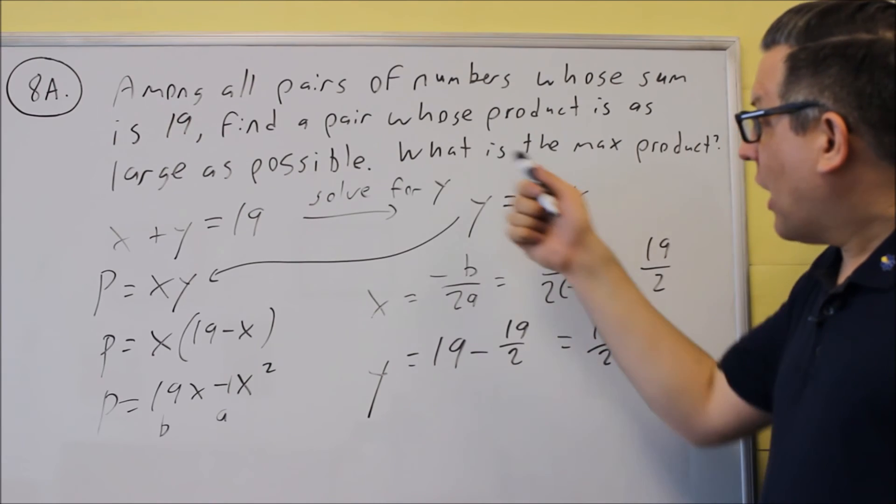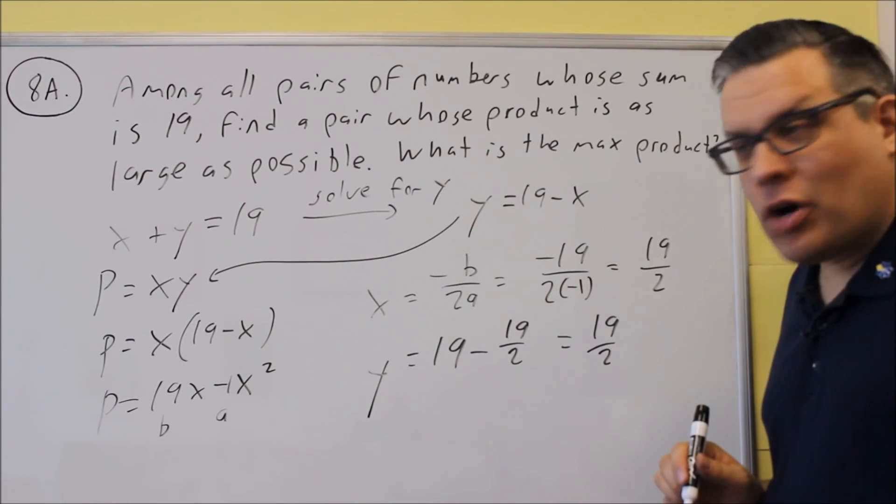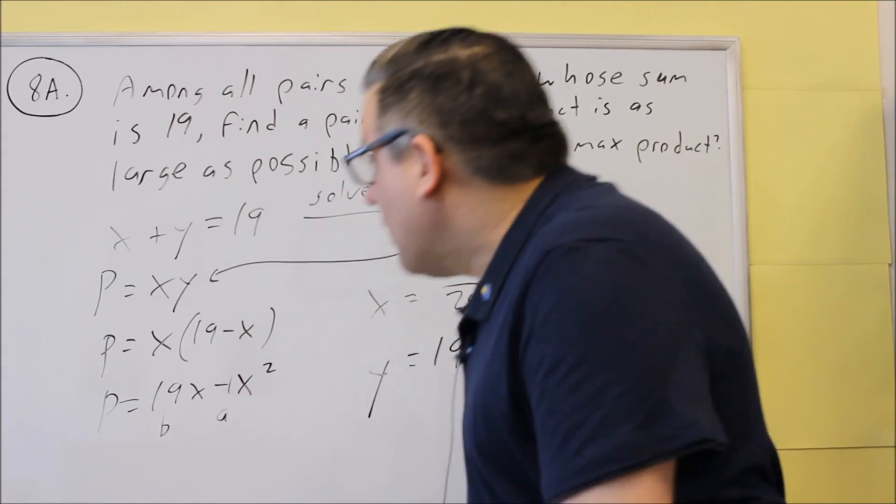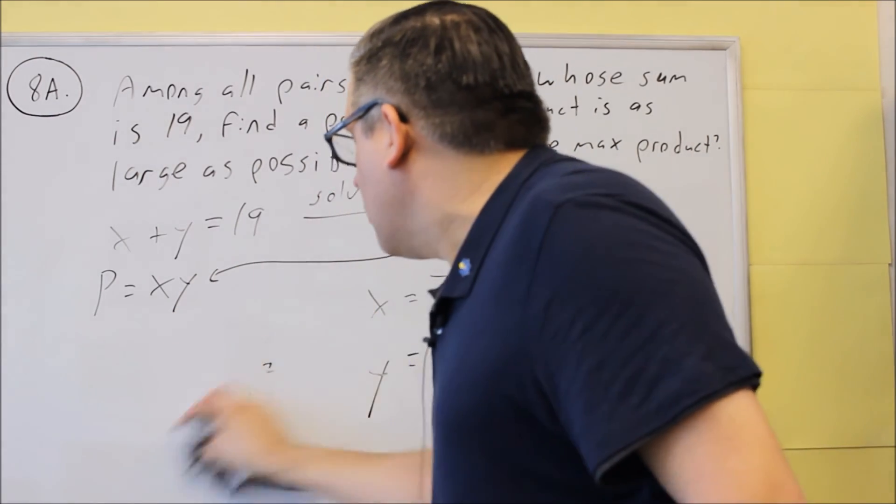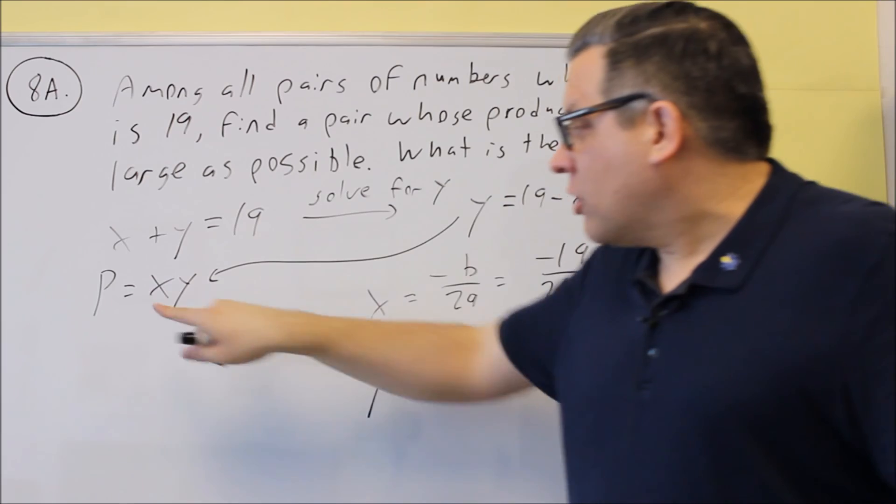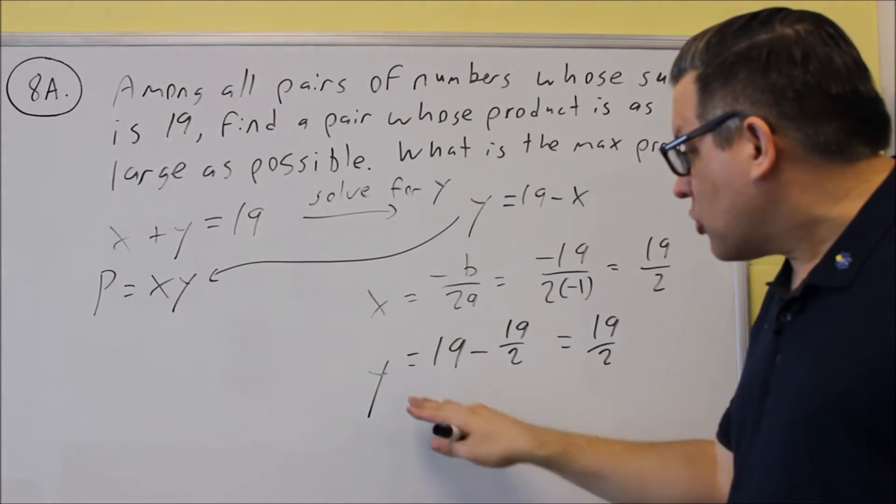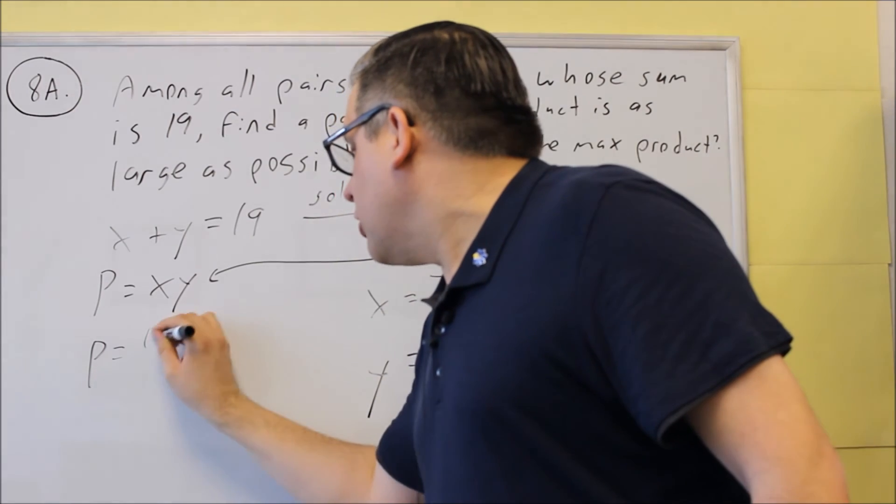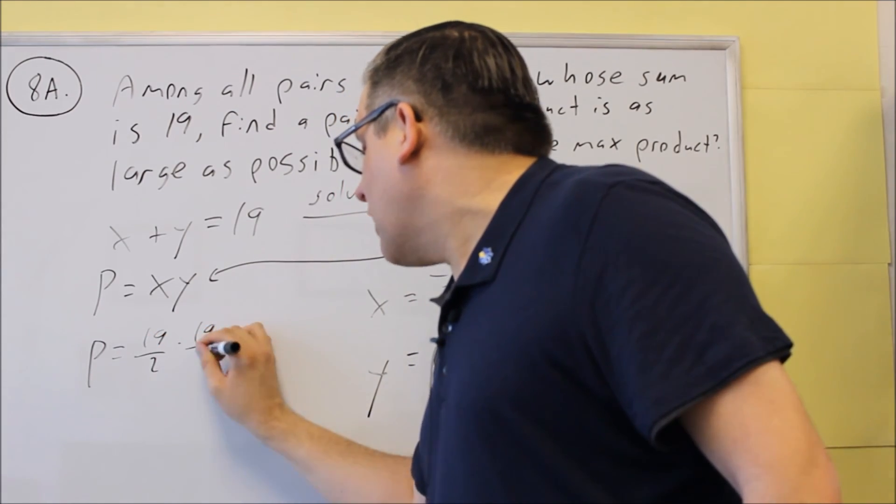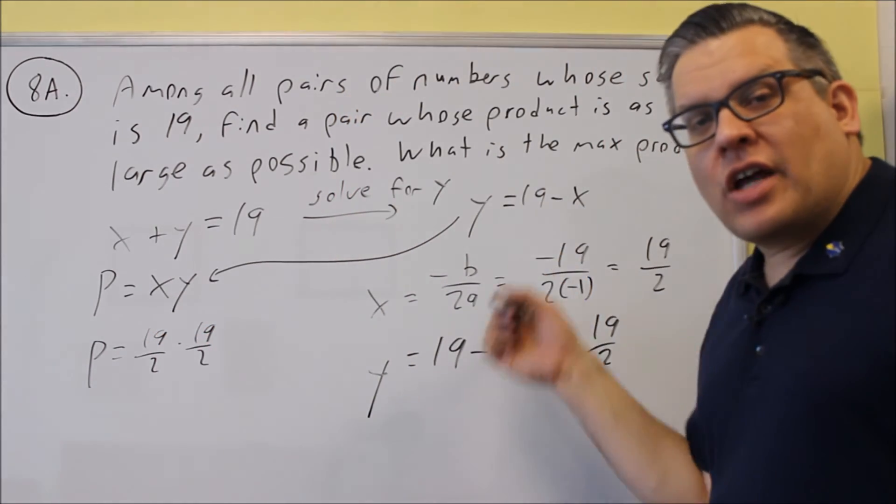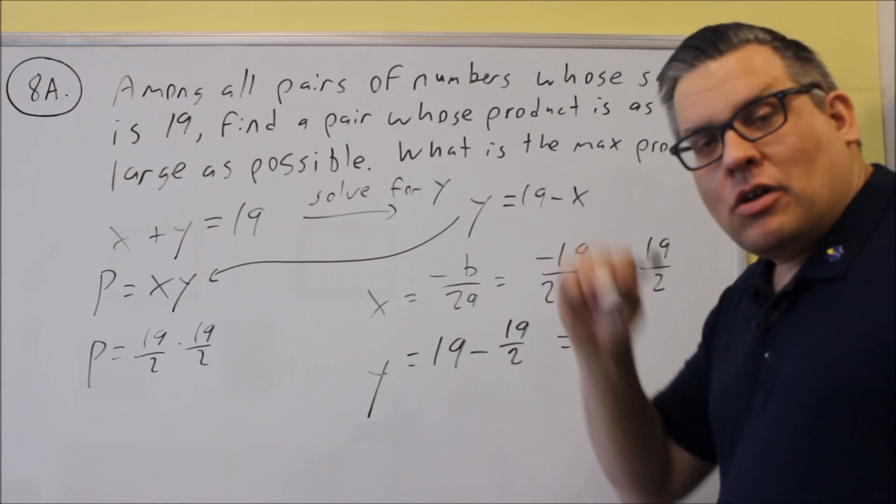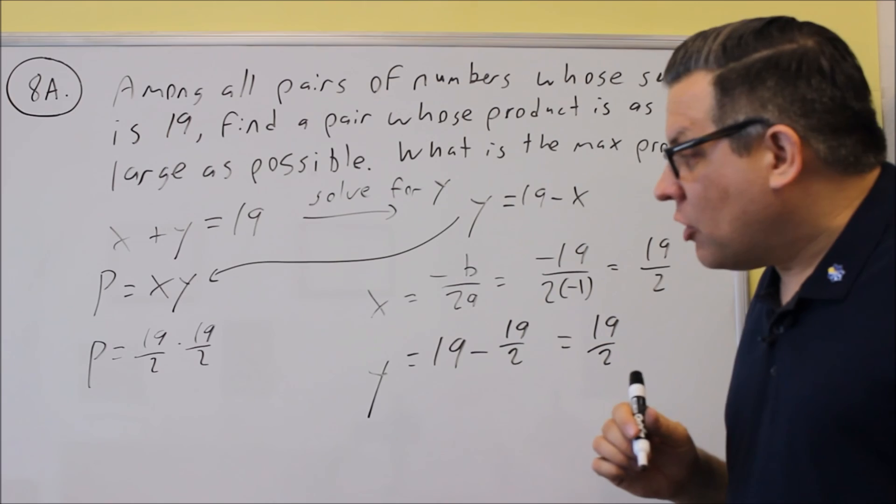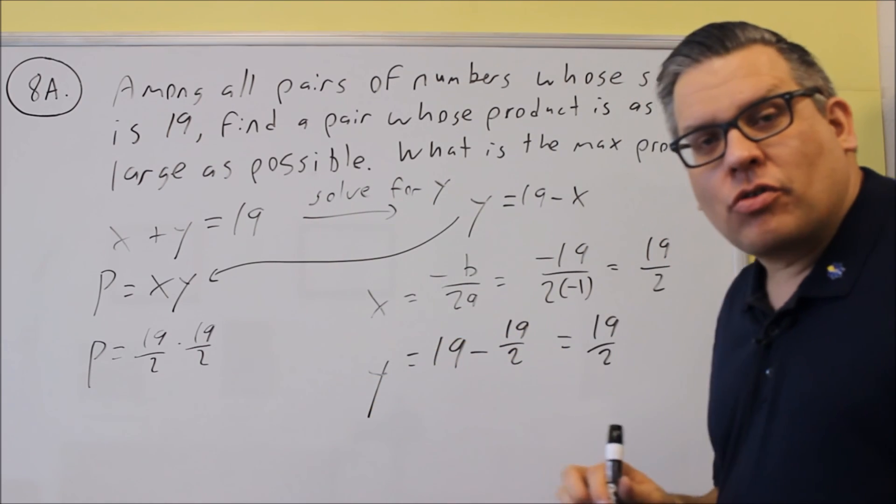Now the other line, the thing it asks for, it says what is the maximum product? Well, what you can do for that one is you can actually use this formula, p equals xy, because we already have the x and the y there. So if you do this one, you can do 19 halves times 19 halves. You could also put 19 halves back into the p formula I had earlier that I erased that was down here. But that's a little bit more work. This is going to be easier to do that way.